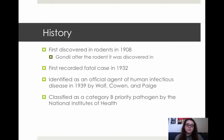Toxoplasmosis was first discovered in 1908 in rodents. The species gandhi is named after the rodent in which it was discovered. The first recorded fatal case of Toxoplasmosis was in 1932. However, Toxoplasmosis was not officially classified as an agent of human infectious disease until 1939.